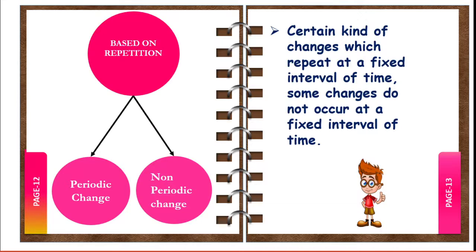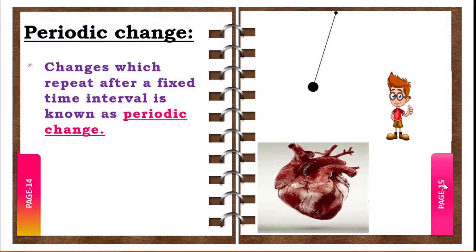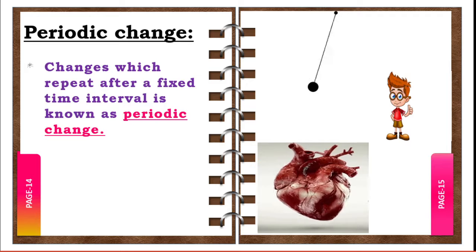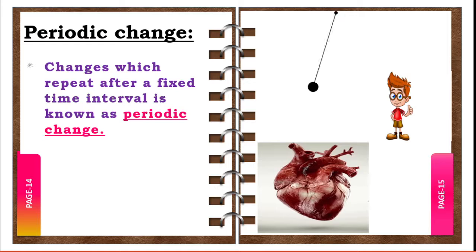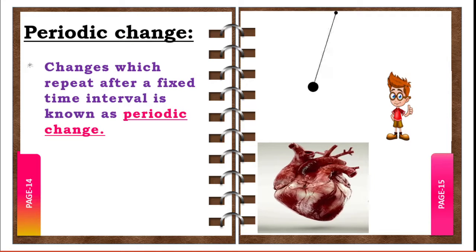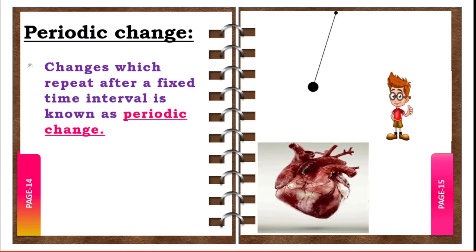Changes can be classified into two ways: periodic change and non-periodic change. Changes which repeat after a fixed interval of time are known as periodic changes. For example, the change in day and night occurs at a fixed interval of time, and the change in seasons also takes place after a fixed interval of time.